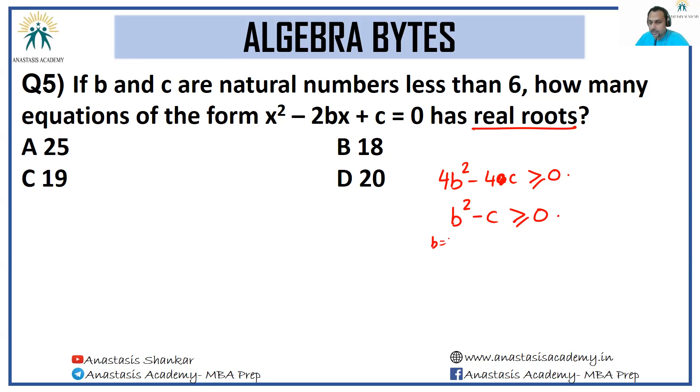When b = 1, c can only be equal to 1. When b = 2, c can be equal to 1, 2, 3, or 4. It cannot go beyond this because we were told these numbers are less than 6. When b = 3, same 5 cases. When b = 4, the same 5 cases will repeat. When b = 5, the same 5 cases will repeat. So I have 5 from here, 5 from here, 5 from here, 4 from here, 1 from here. Altogether we have 20 cases, so answer has to be option B.